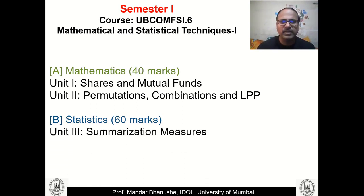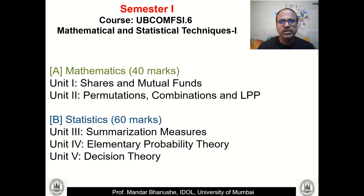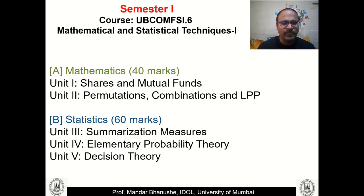In Unit 3 we will talk about different types of averages — mean, median, mode, etc. Unit 4 will be on elementary probability theory, and Unit 5 will be on decision theory, which is very important for managerial applications. That covers semester one's five units, and we shall now see the detailed syllabus of all five units in semester one.